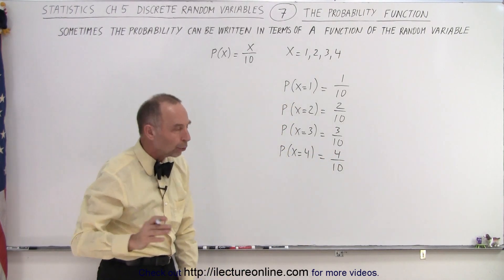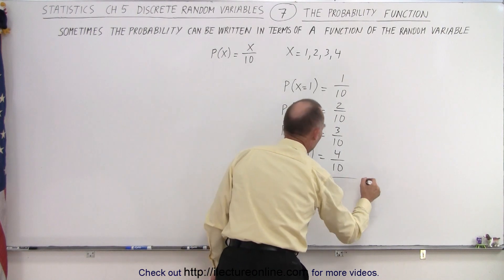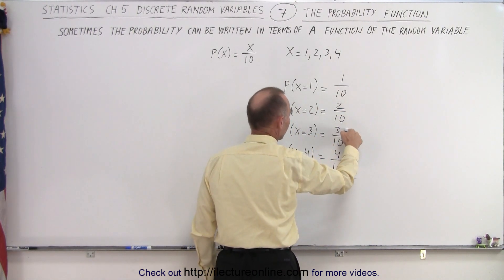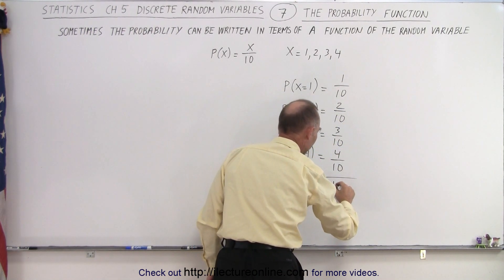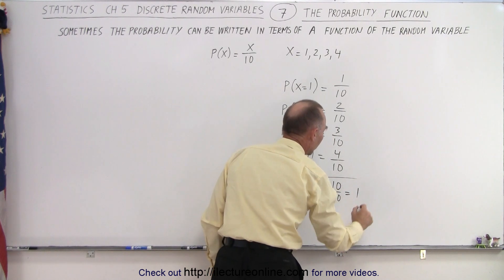Now let's go ahead and add up all those probabilities. So when we add them all up, 1 plus 2 plus 3 plus 4, that would be 10 over 10, which is equal to 1.